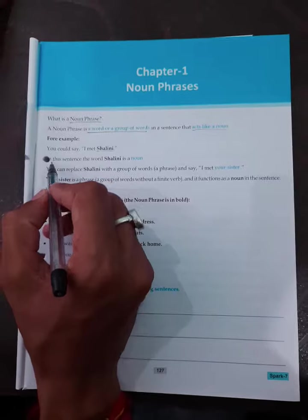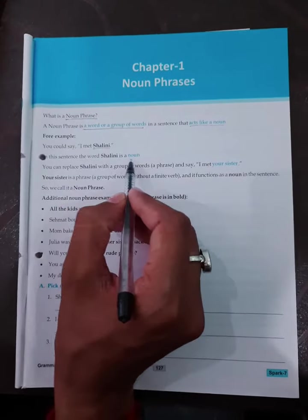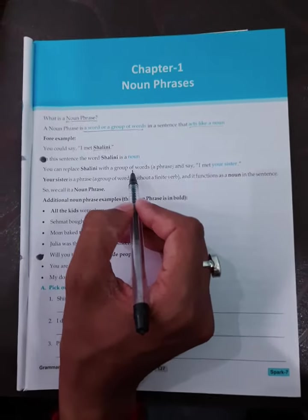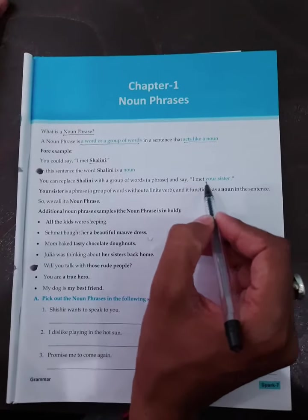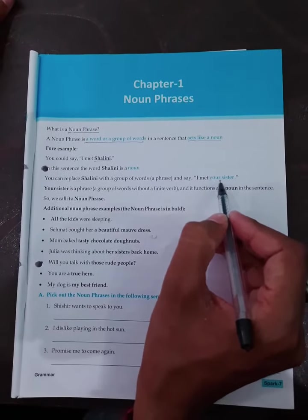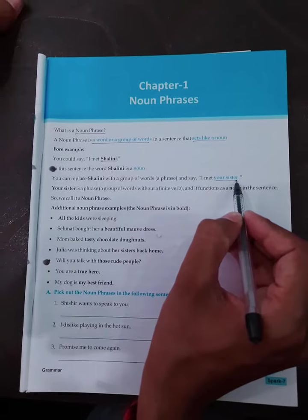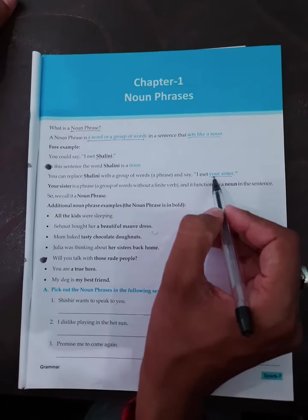In this sentence, the word Salini is a noun. You can replace Salini with a group of words, a phrase, and say I met your sister. So your sister here is Salini, so sister is a noun. Here is another noun phrase.